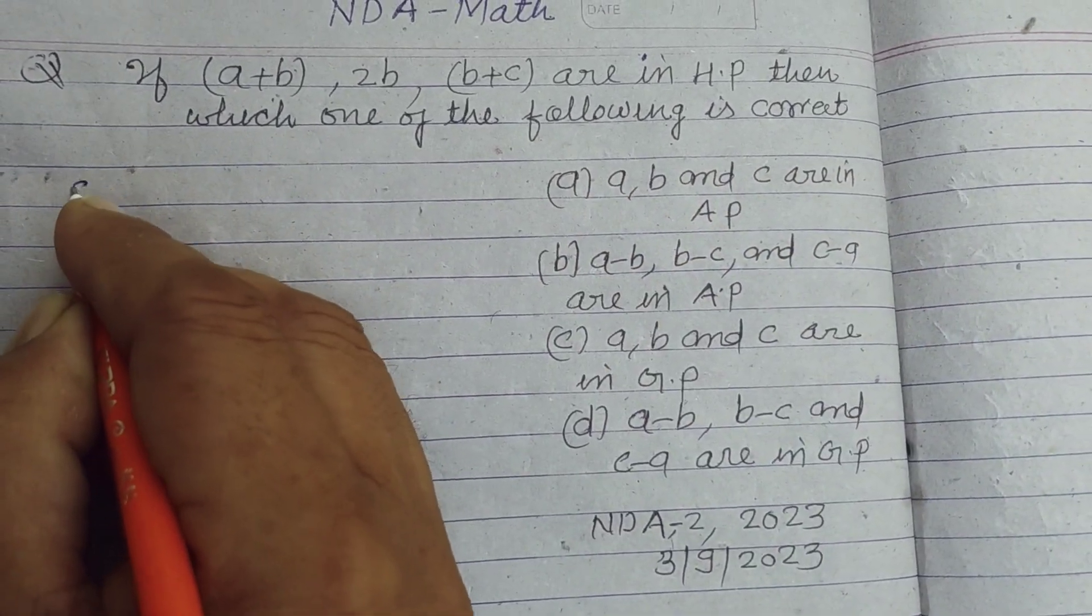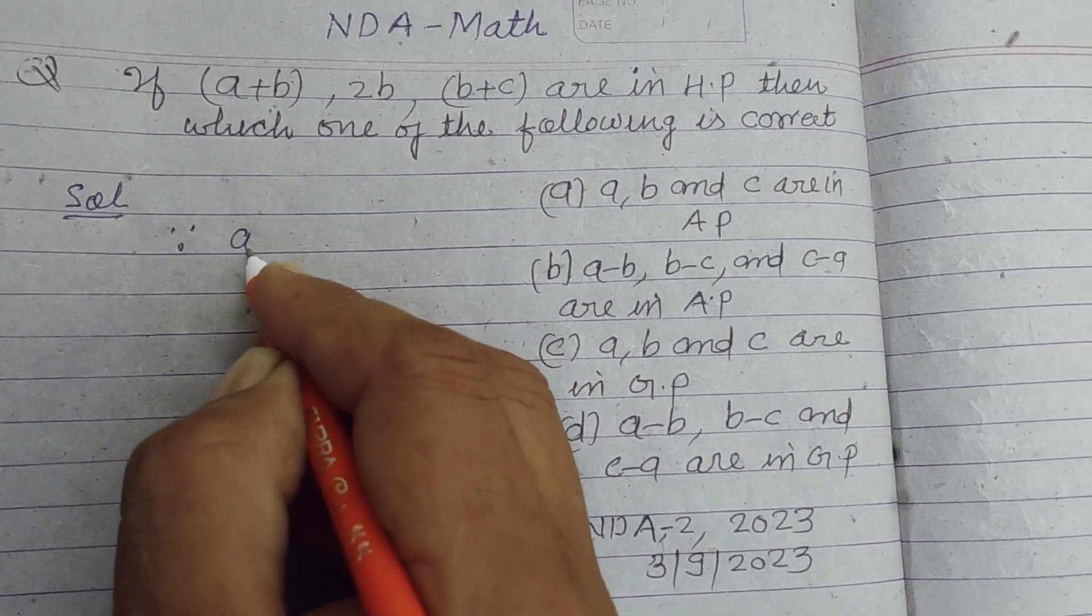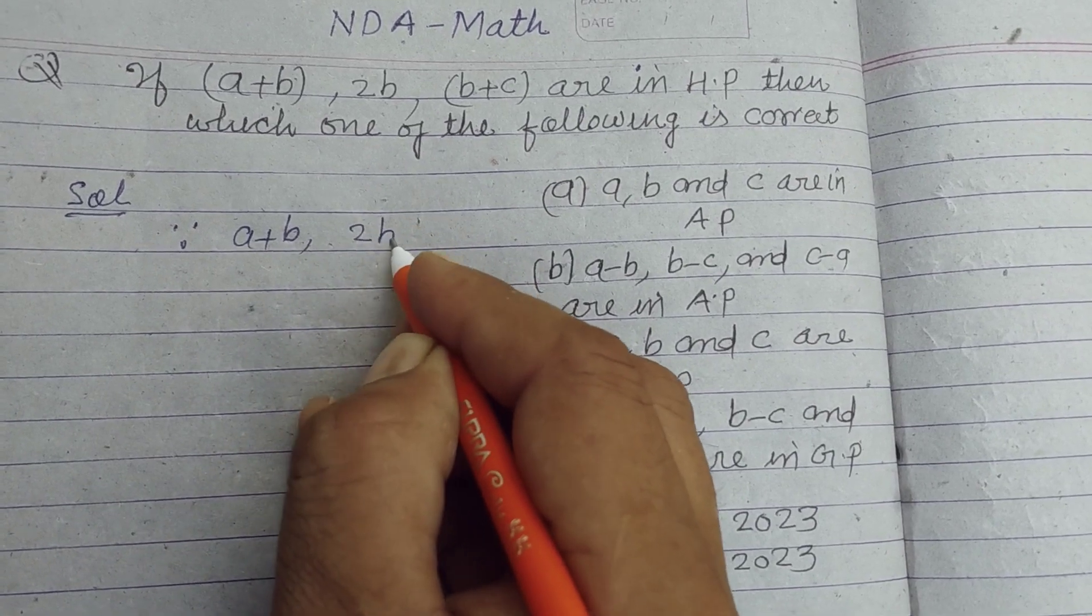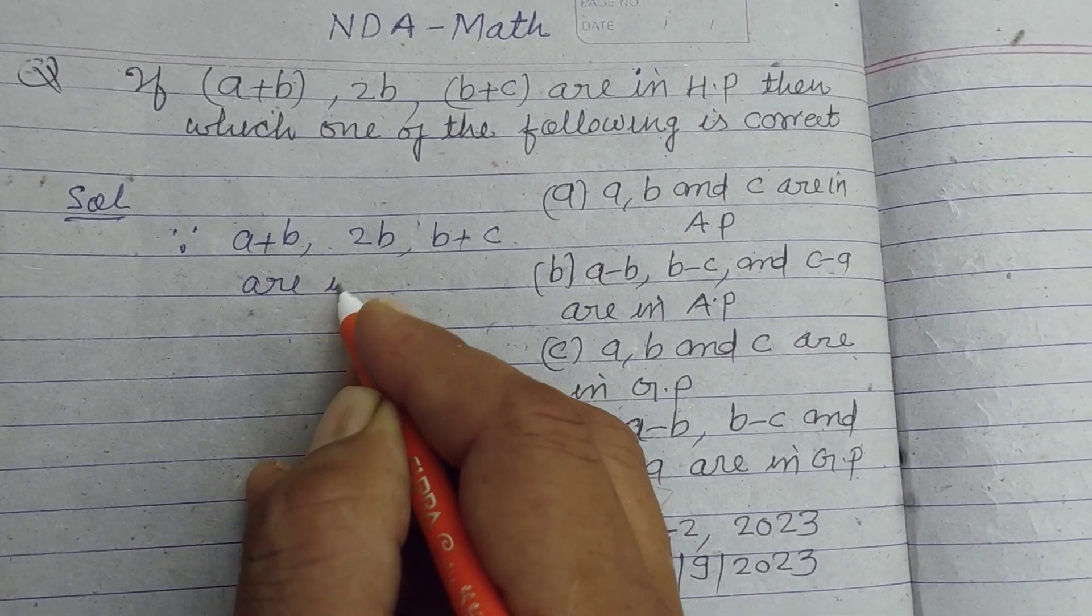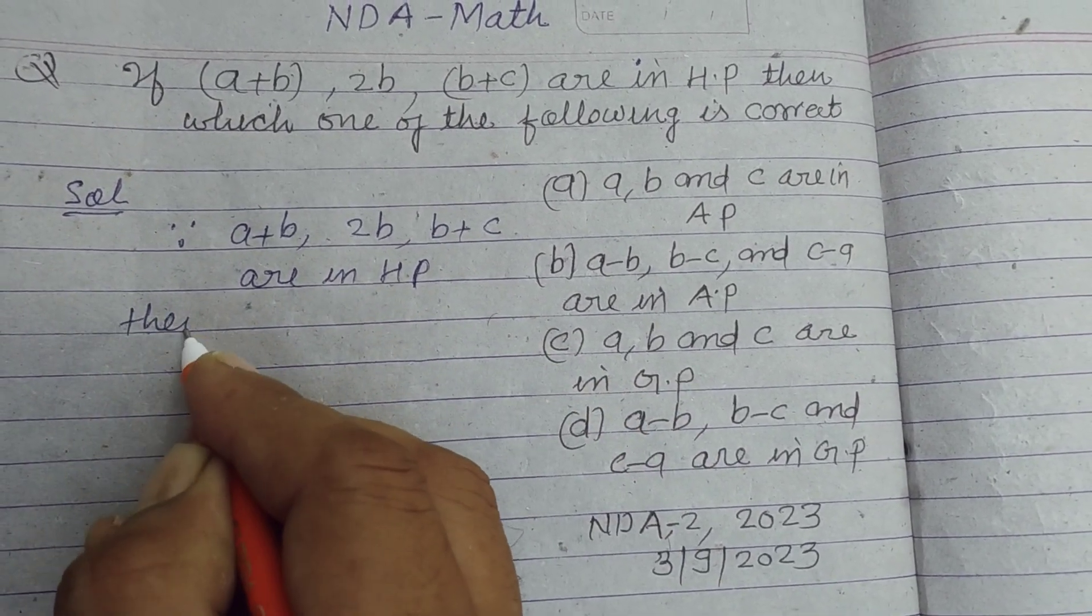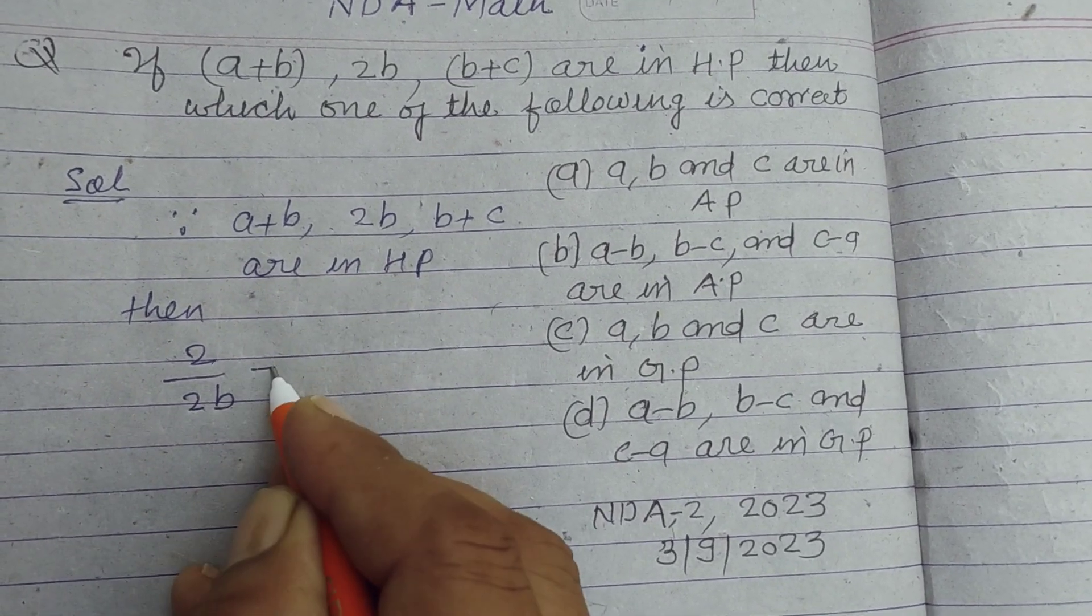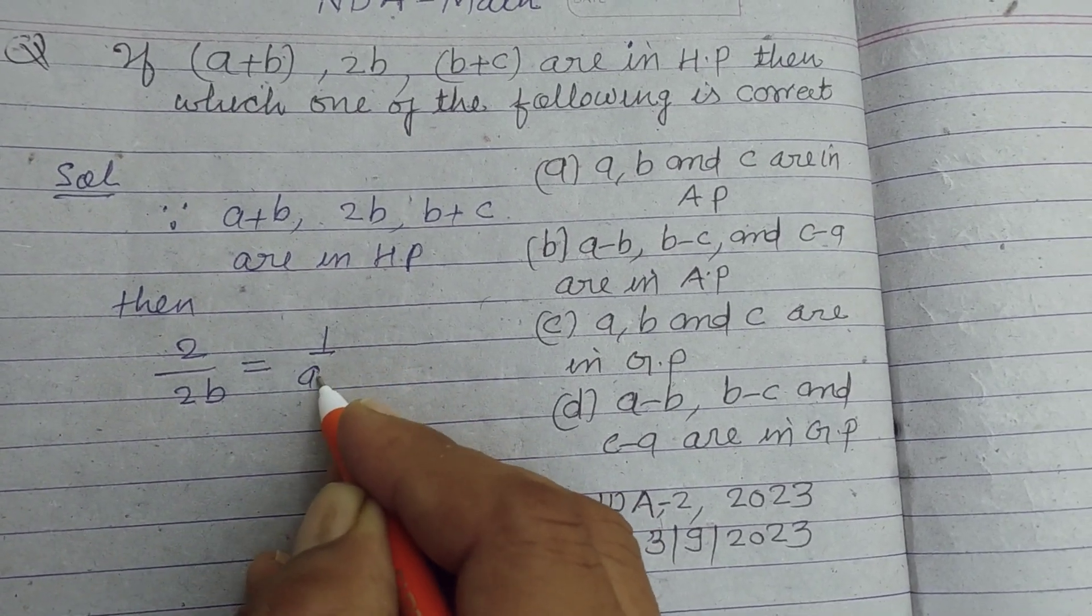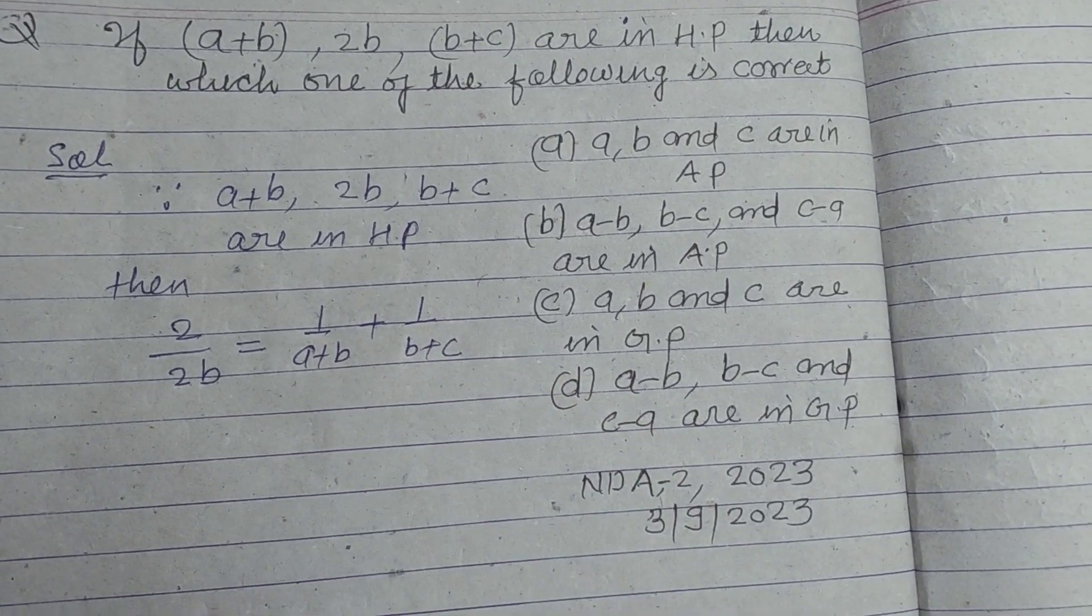So student, since a+b, 2b, and b+c are in HP, then 2 upon 2b equals 1 upon (a+b) plus 1 upon (b+c).